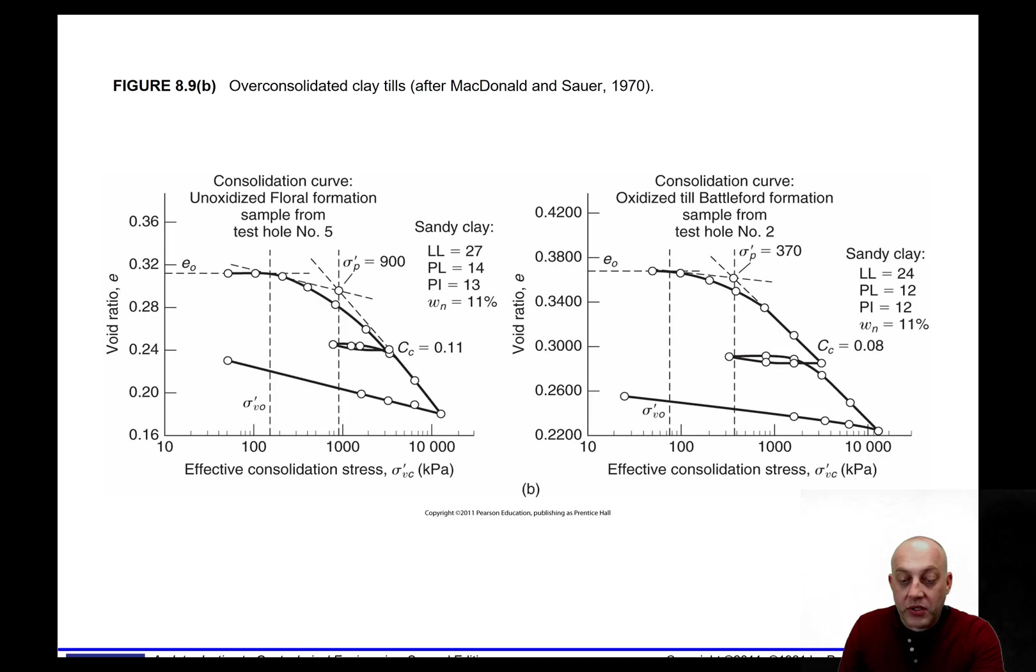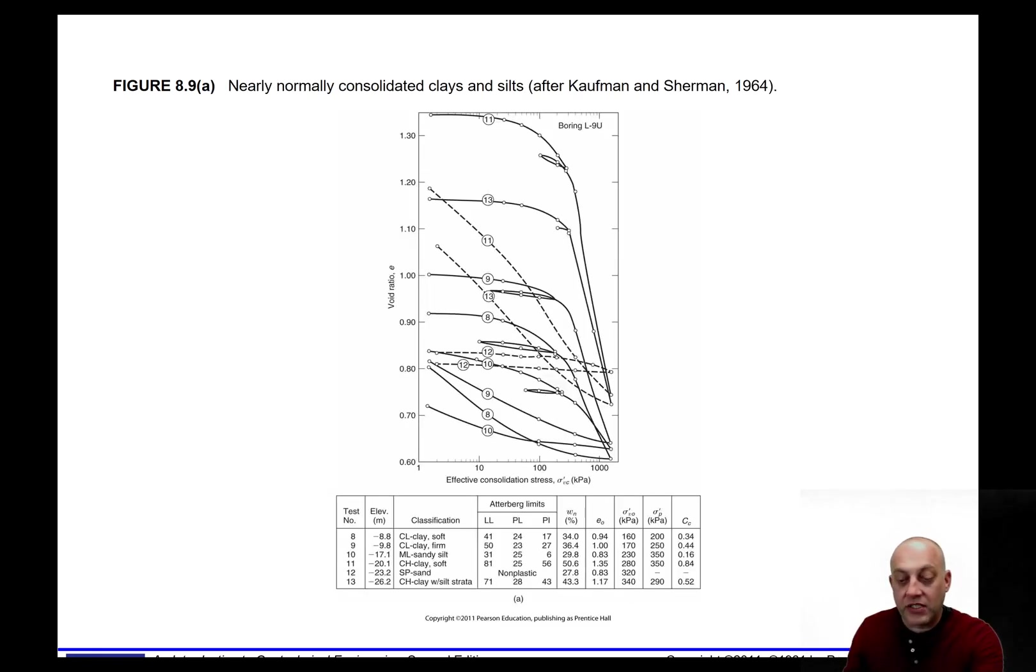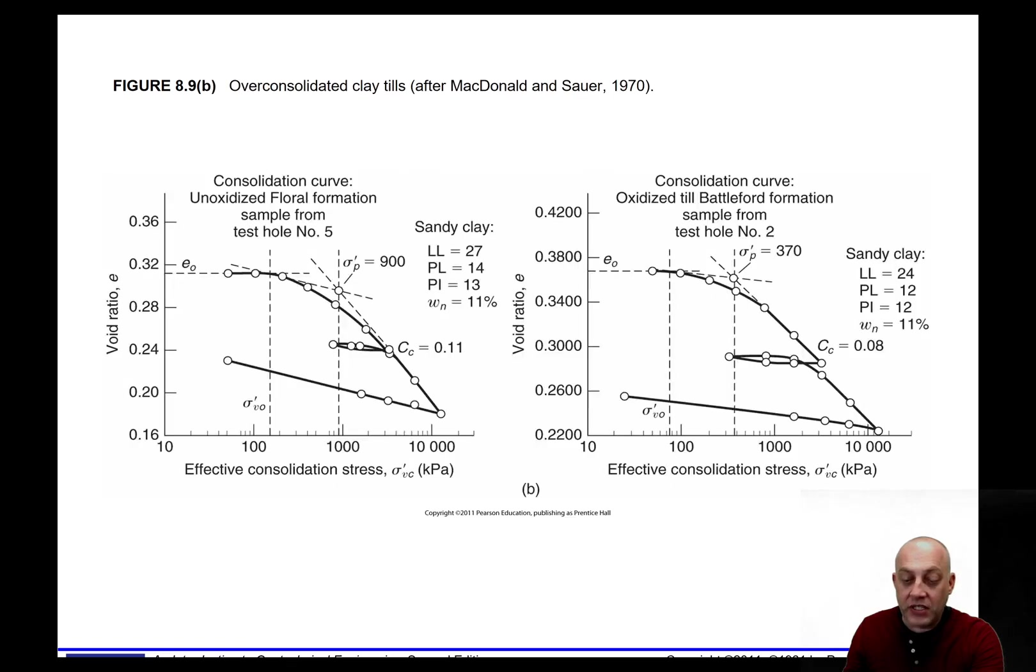But here's an example of some clay till. So this is glacial till. It's been underneath a big glacier. Notice that the void ratio is really low, right? In the previous slide, we were dealing with void ratios up around 1.3, much higher, although that's not even really that high of a void ratio. 0.3 is really a low void ratio for clay, so this has really been compressed a lot underneath that glacier. And this is showing Casagrande's method for getting sigma 1p prime.